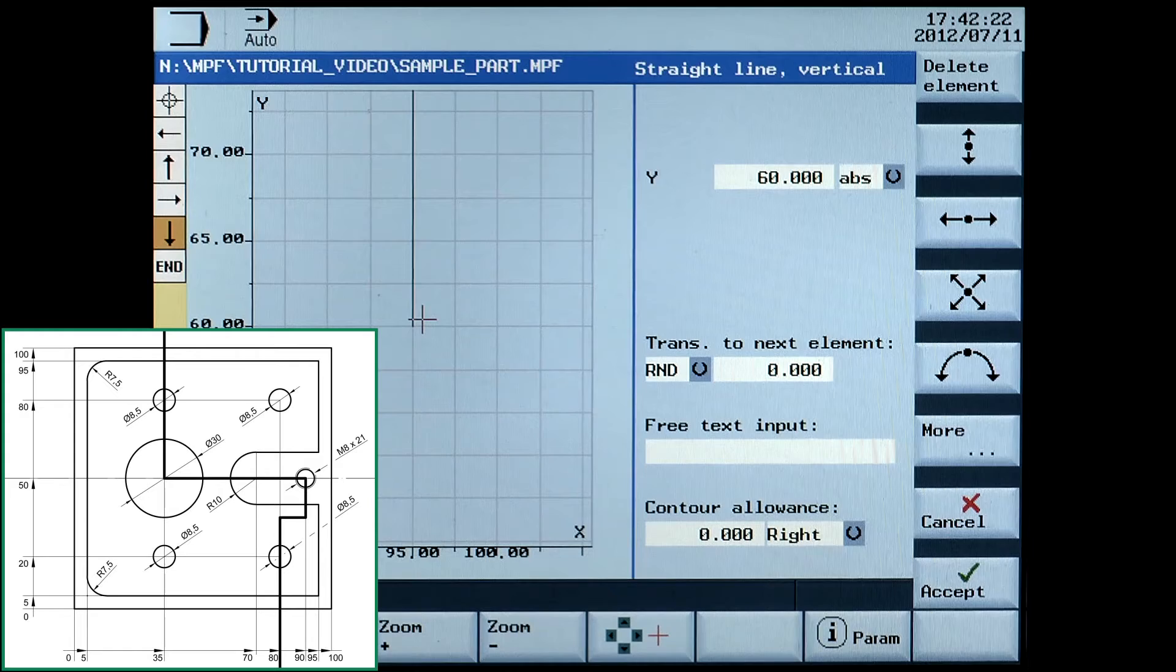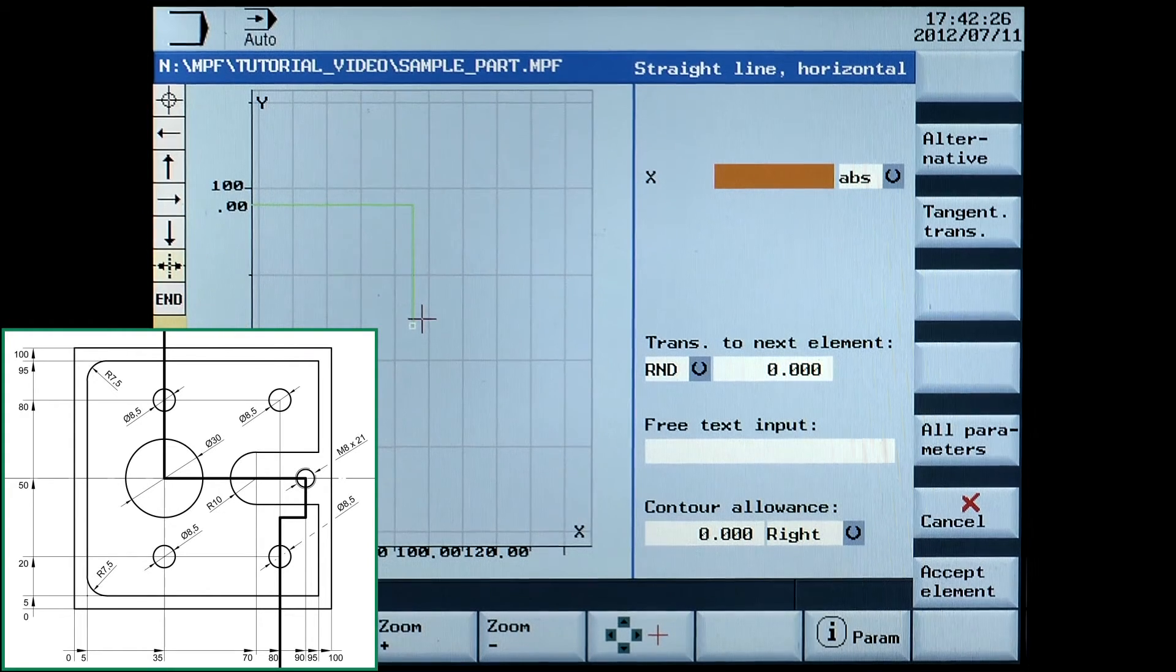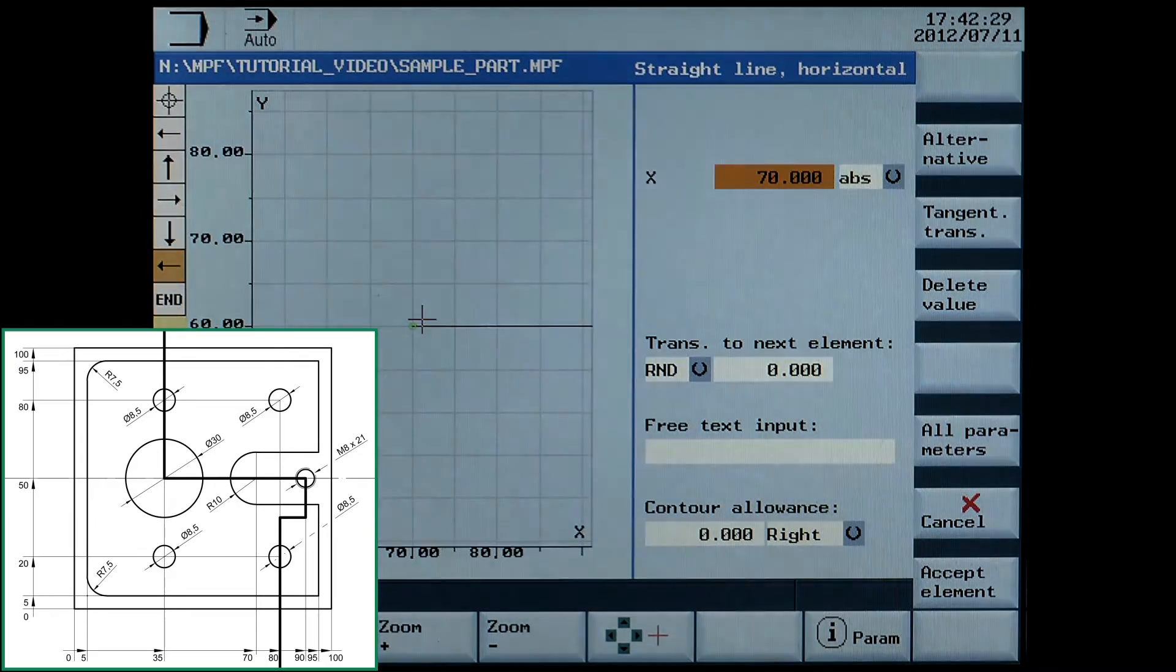Next is a horizontal line. Enter X70 absolute. Accept element.